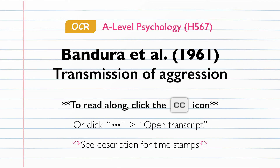Each participant took part in one of three conditions. The three independent variables consisted of: the type of model — whether the child observed an aggressive adult model, a non-aggressive adult model, or no model in the control condition; the sex of the model, whether male or female; and the sex of the child, whether boy or girl. The dependent variable was the amount of aggressive behaviour shown by children in the third phase of the experiment. This was measured by the researcher and sometimes a secondary observer through a one-way mirror using a time-sampling method, with observations at five-second intervals. Behaviour was classed into three categories: imitative-aggressive responses, partially imitative responses, and non-aggressive imitative responses.